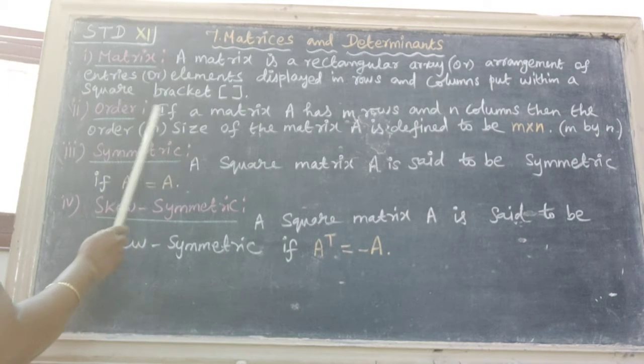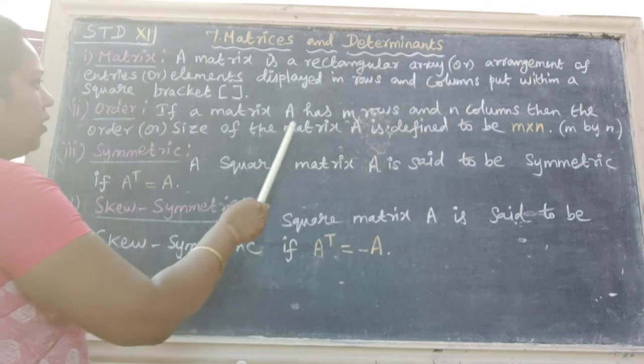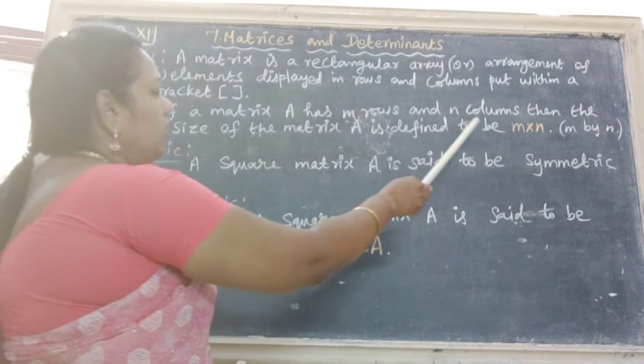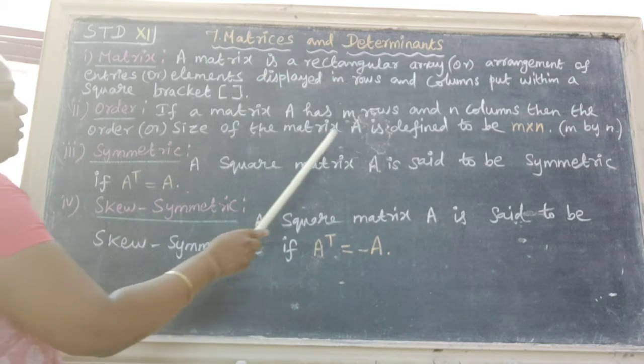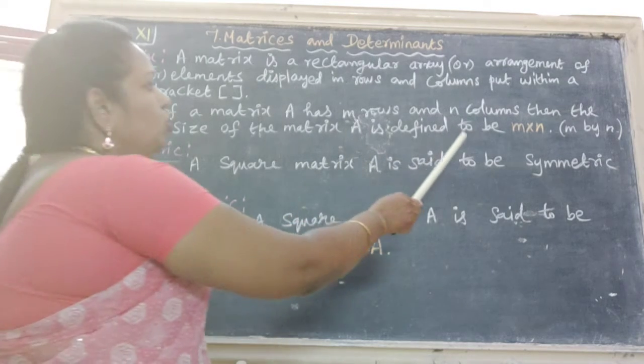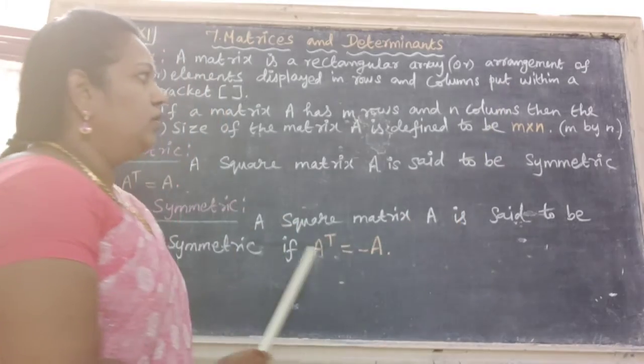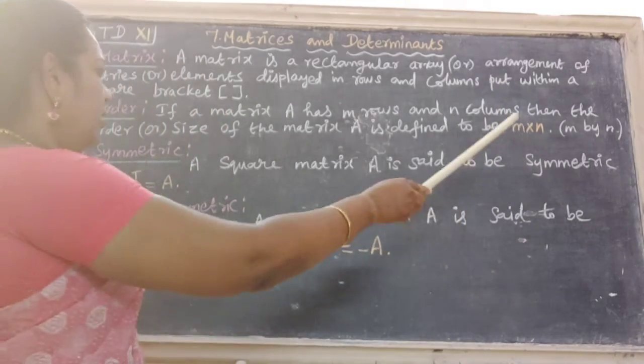Next definition is order. If a matrix capital A has m rows and n columns, then the order or size of the matrix capital A is defined to be m cross n, that is read as m by n.